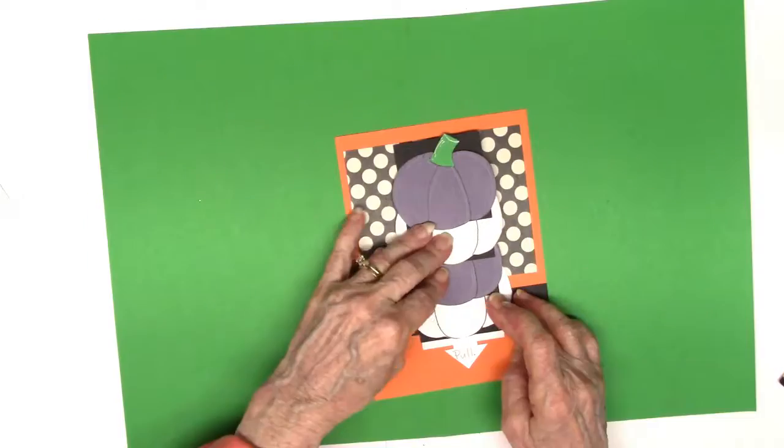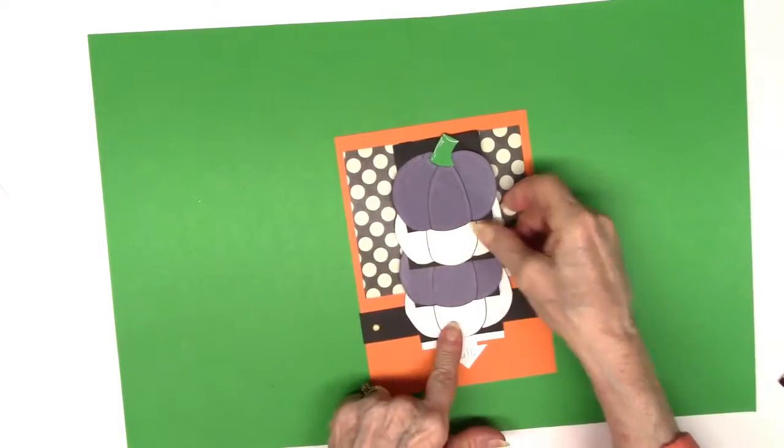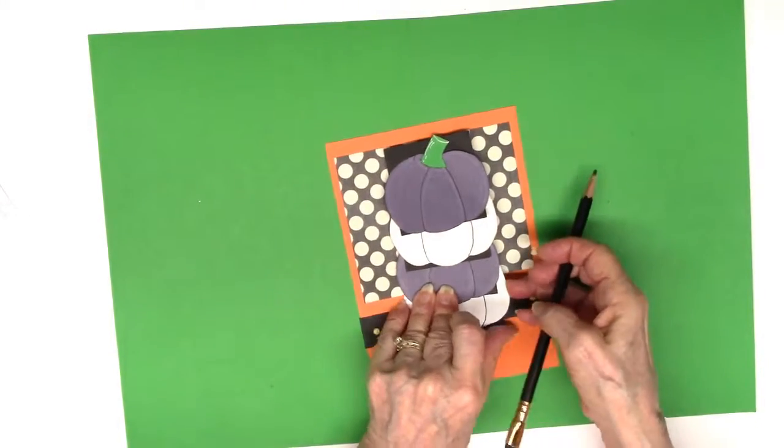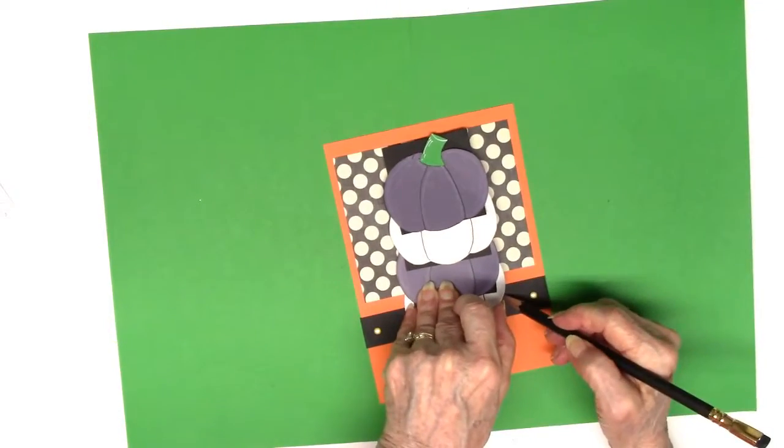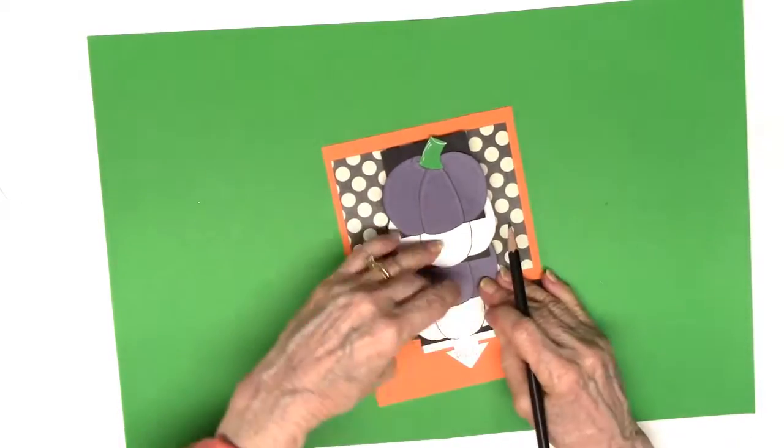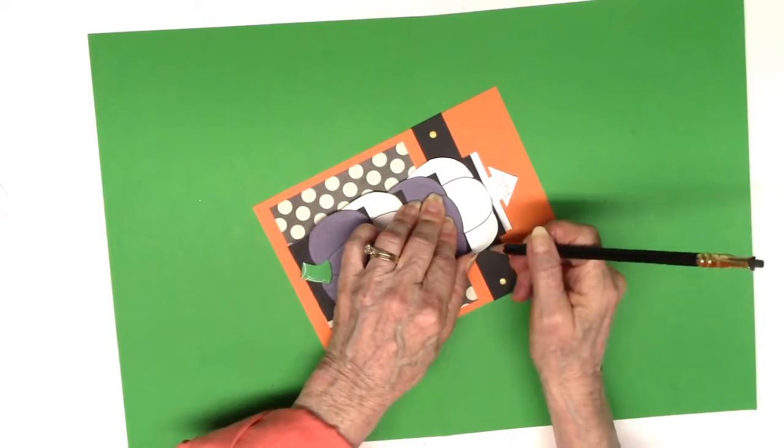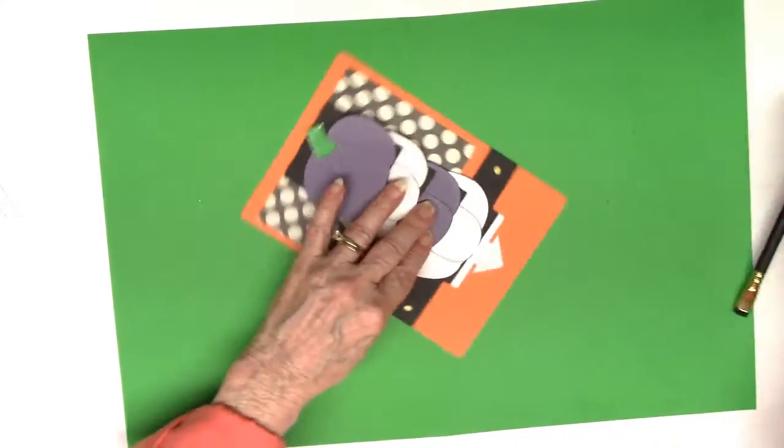So I'm lining it up, the top of the pumpkins with the top of the pattern paper, trying to center it. I'm going to go back with a pencil and just make some little marks as to where that two and a fourth inch strip is, try to get it centered.